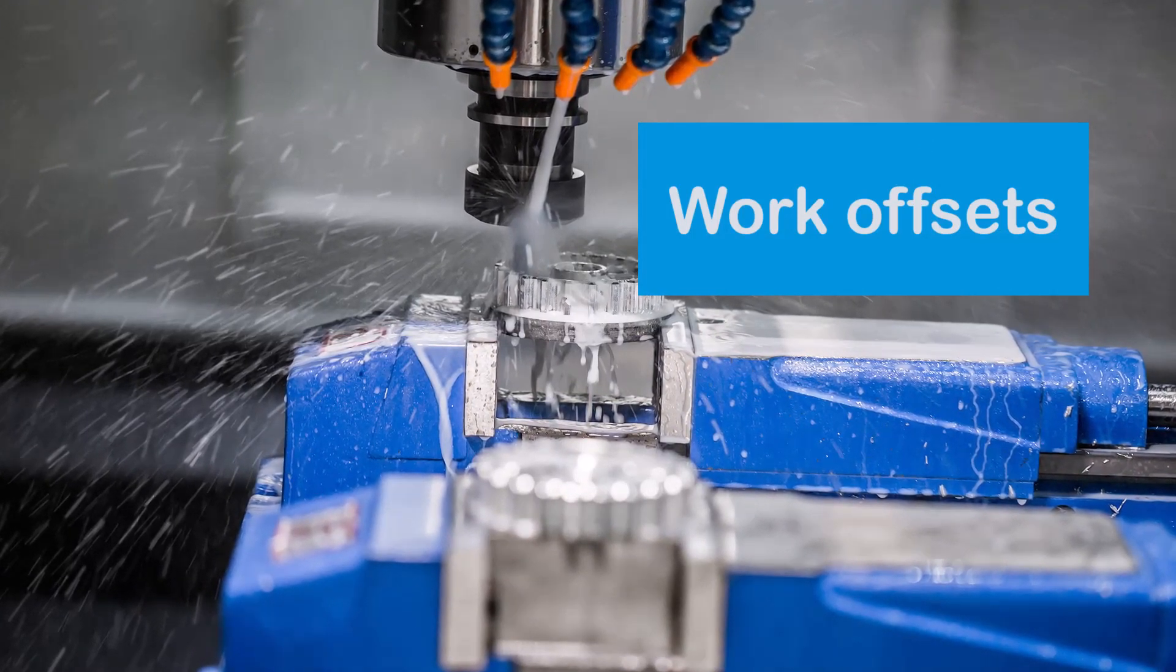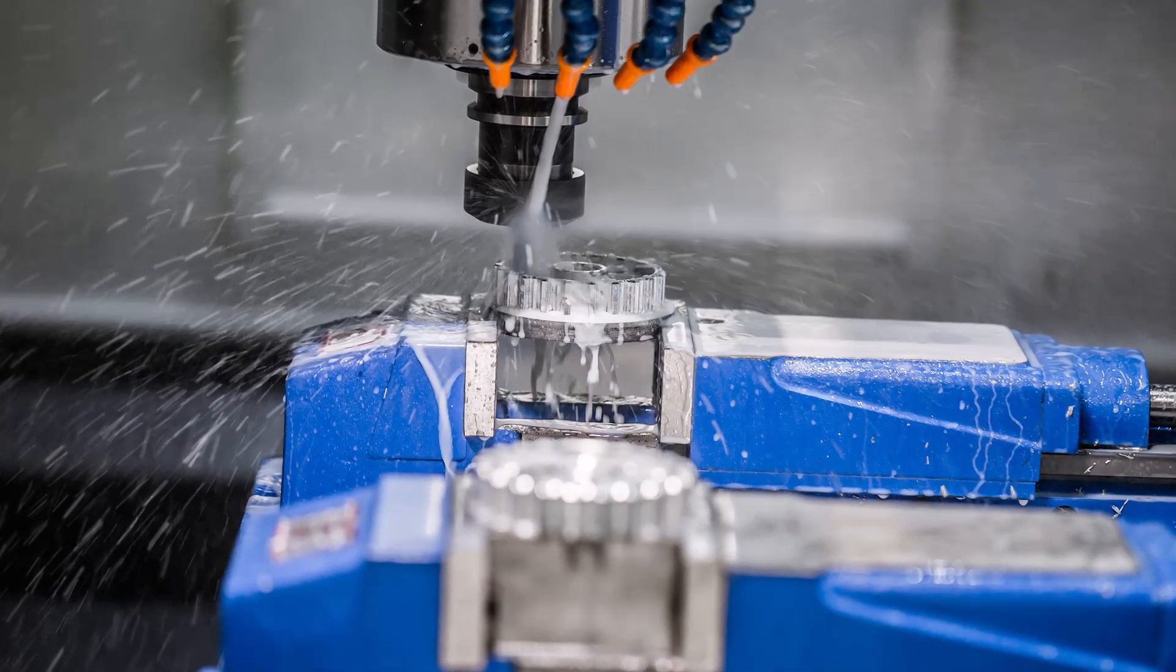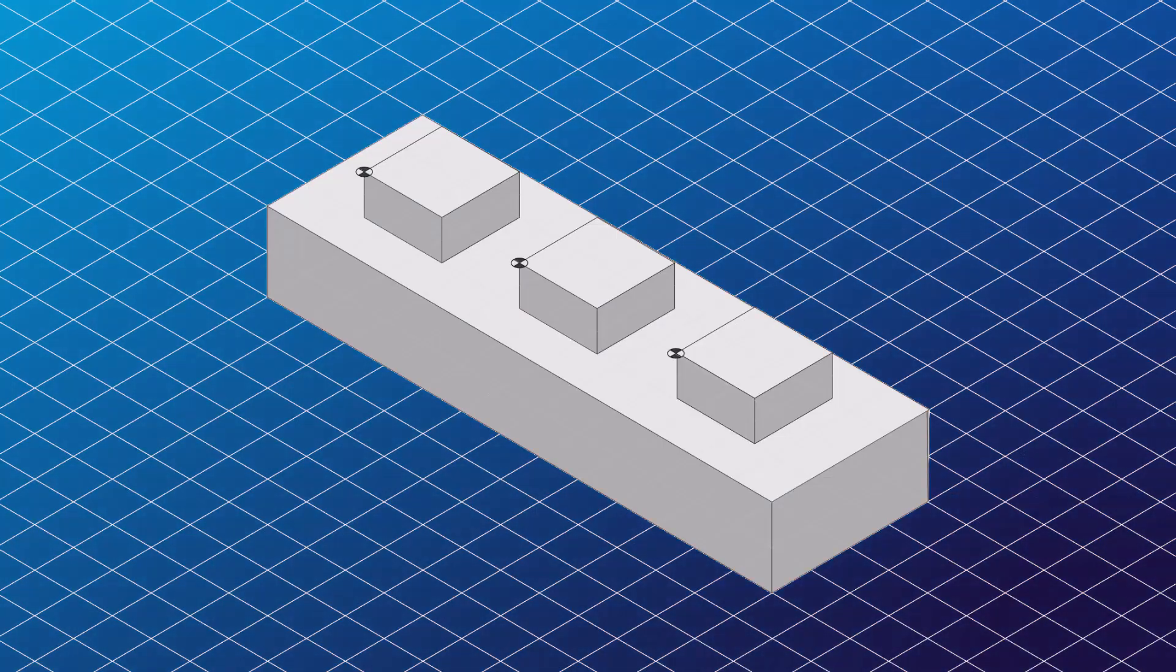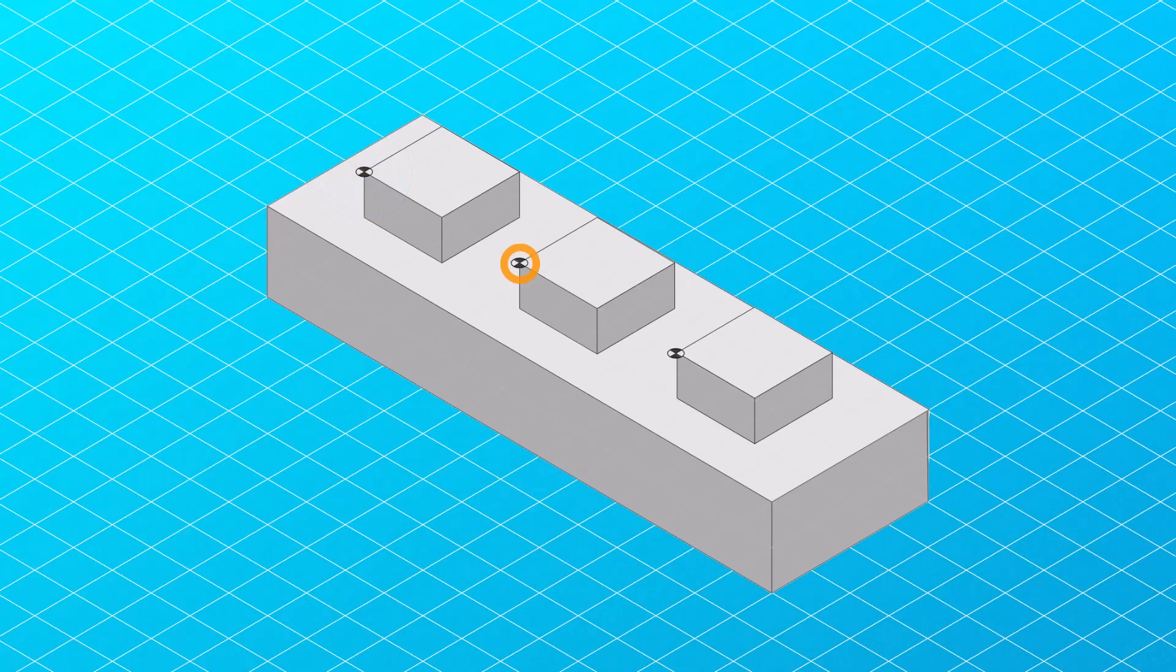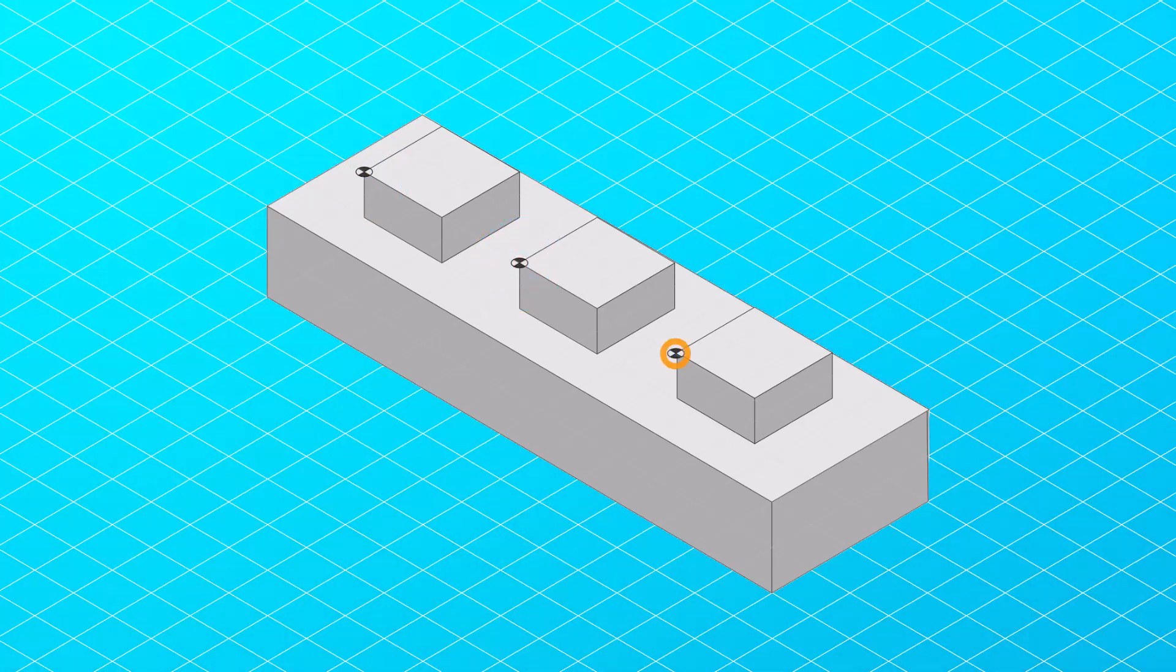Work offsets allow us to create multiple virtual workspaces within the machine's physical workspace. This is particularly useful for production runs of different parts or when the same part requires different setups.